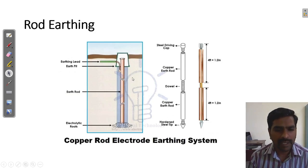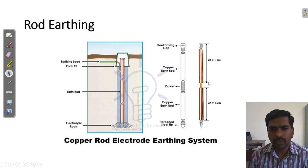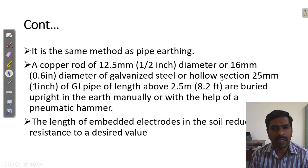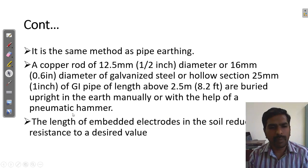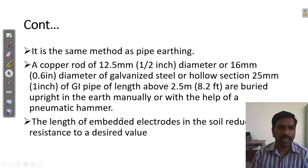Rod earthing is the same as pipe earthing, but here they use a copper rod. The copper rod is arranged — there are two copper rods of 4 feet each, connected with a dual. The copper rod is of 12.5 millimeter (half inch) diameter, and galvanized steel of 16 millimeter (0.6 inch) diameter, or an alloy of 1 inch, of length 2.5 meter. The total length is 8.2 feet. They are driven into the Earth manually or with the help of a pneumatic hammer. The length of the embedded electrode in the soil reduces the Earth resistance to a desired level. This is rod earthing.